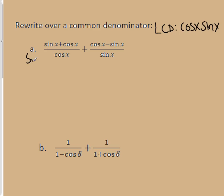So I'm going to come over here, I need to multiply this fraction by the sine of x over the sine of x, and this fraction needs to multiply by the cosine of x over the cosine of x.